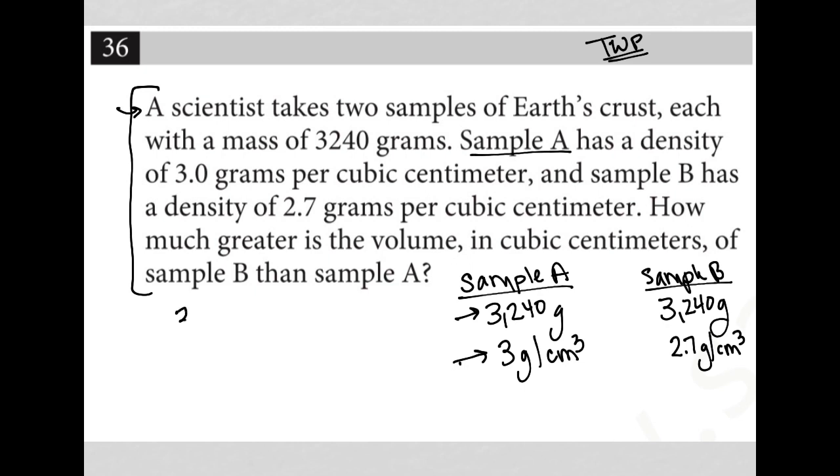So I can take this 3,240 grams and multiply that by three grams on the bottom with one centimeter cubed on top. So basically, I'm just taking this and make sure that my grams are arranged diagonally so they can cross out and turn to the units. And then you see the only unit I'd be left with is the cubic centimeters, which is exactly what the question is asking for. Cubic centimeters is a measure of volume.